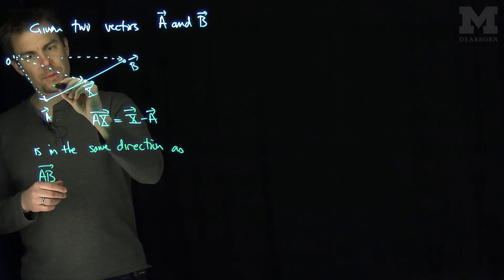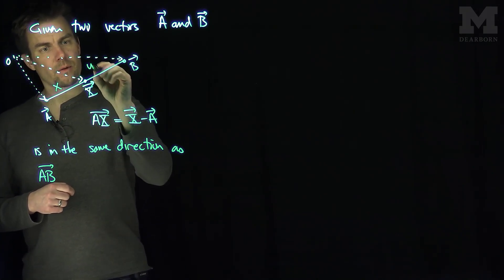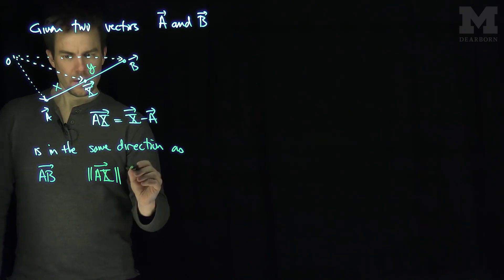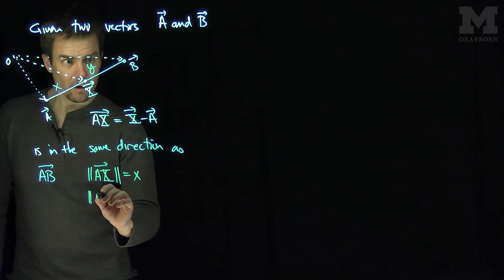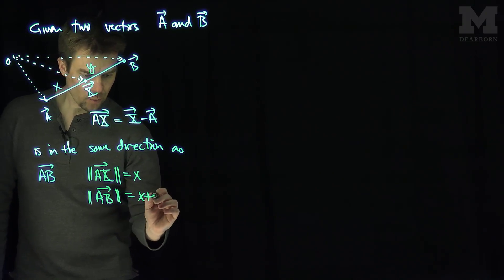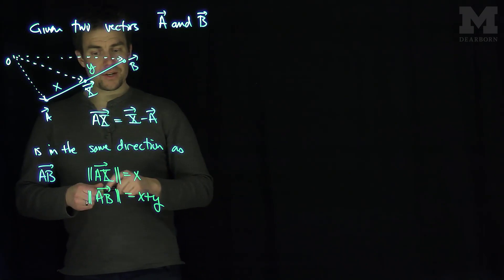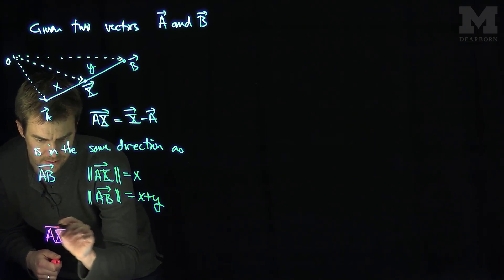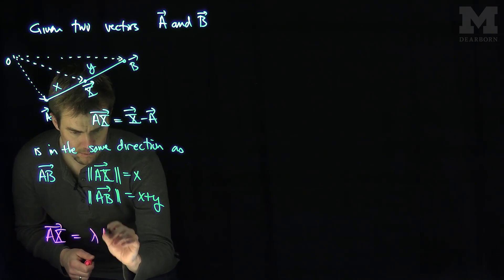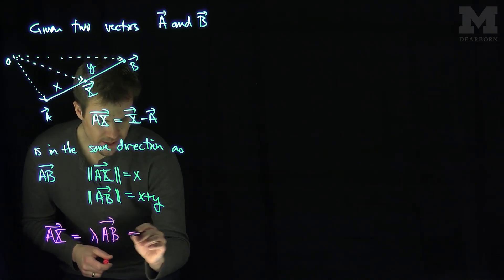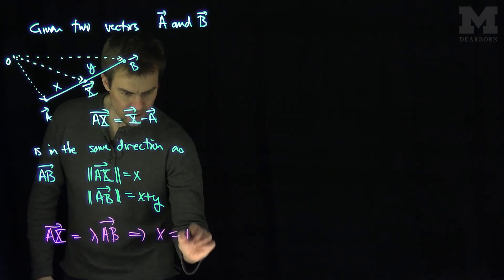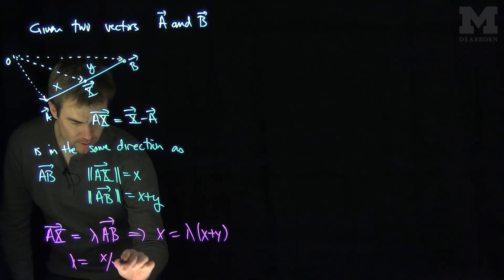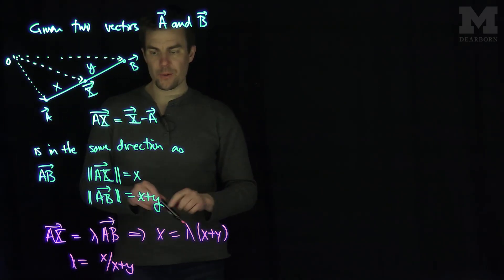If we let this length from A to X have length x, and we let from X to B have length y, then the length of AX as a vector is equal to x, and the length of A to B is equal to x plus y. Since AX is in the same direction as AB, we know that AX is a scalar multiple lambda of AB. Taking the lengths of this equation, x equals lambda times (x plus y), and that tells us exactly what lambda has to be: lambda equals x over x plus y.